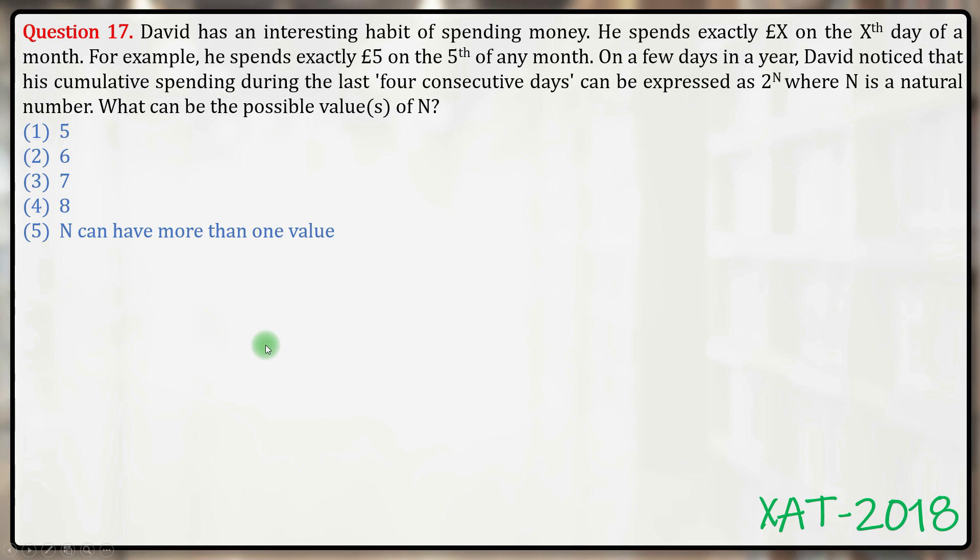last four consecutive days can be expressed as 2 raised to the power n, where n is a natural number. What can be the possible value or values of n?